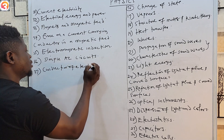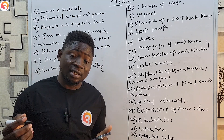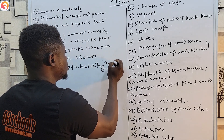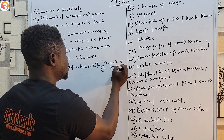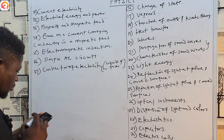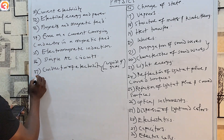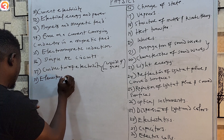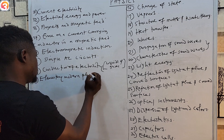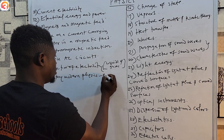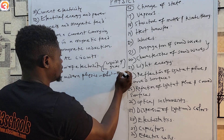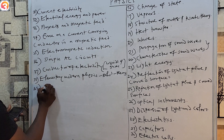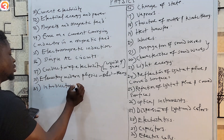The thirty-seventh topic is conduction of electricity — we look at conduction of electricity through liquids and through gases. The thirty-eighth topic is elementary modern physics, including Bohr's theory. The thirty-ninth topic is introductory electronics.